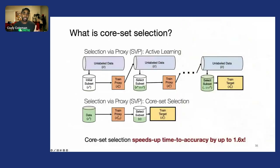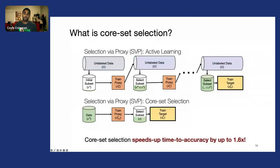We can apply the same idea of Selection by Proxy to this problem of core set selection, where we take our small proxy model that's quick to train, train it on all of our labeled data, and then use that model to filter out unnecessary data points.